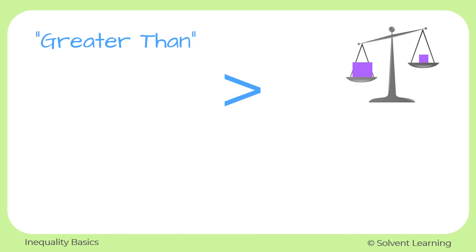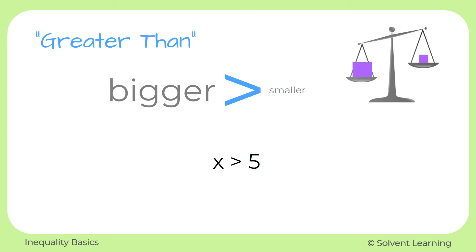More about the greater than symbol: it almost looks like an arrow. On the left side we're going to have the bigger value, and on the right side we'll have the smaller value — just like in that previous example where 20 was greater than 7. You can also think of it as the arrow points towards the smaller value. If we use a variable, we could say x is greater than 5. x could be 6, 7, 100, 1,000 — it could be any number that's more than 5.